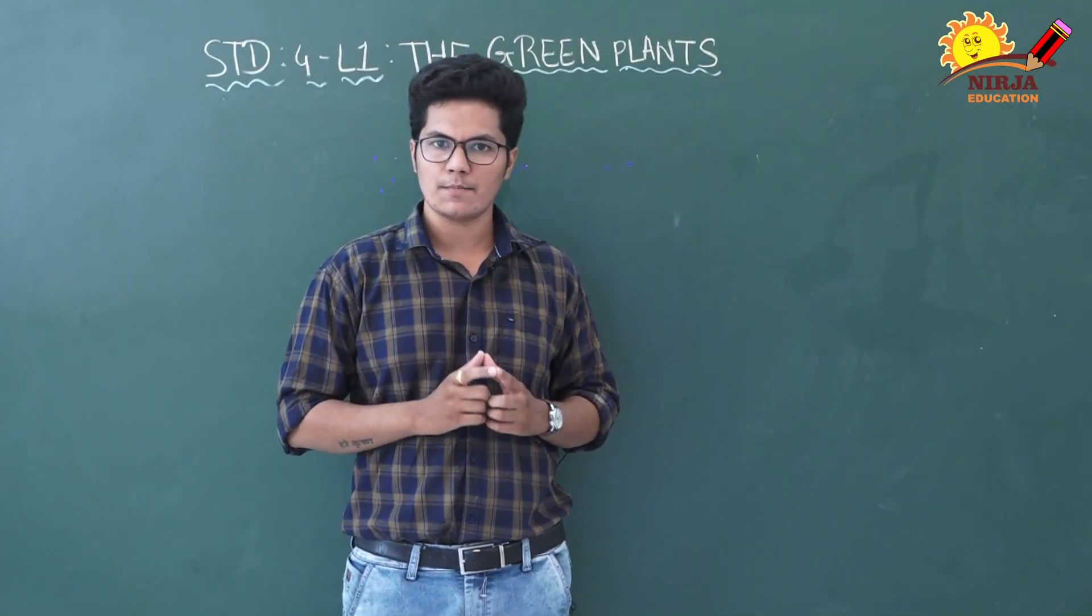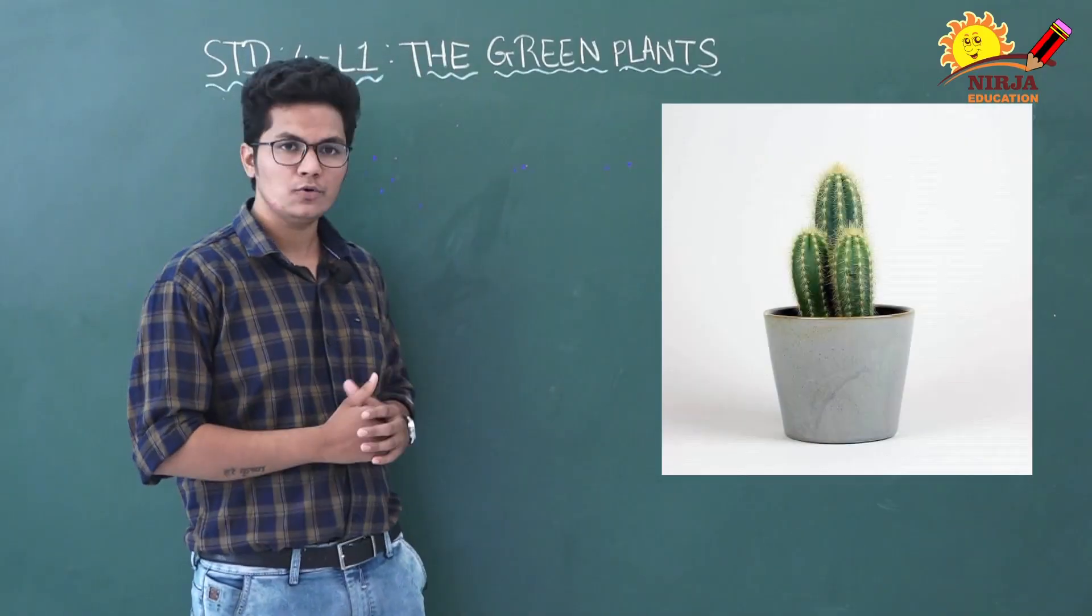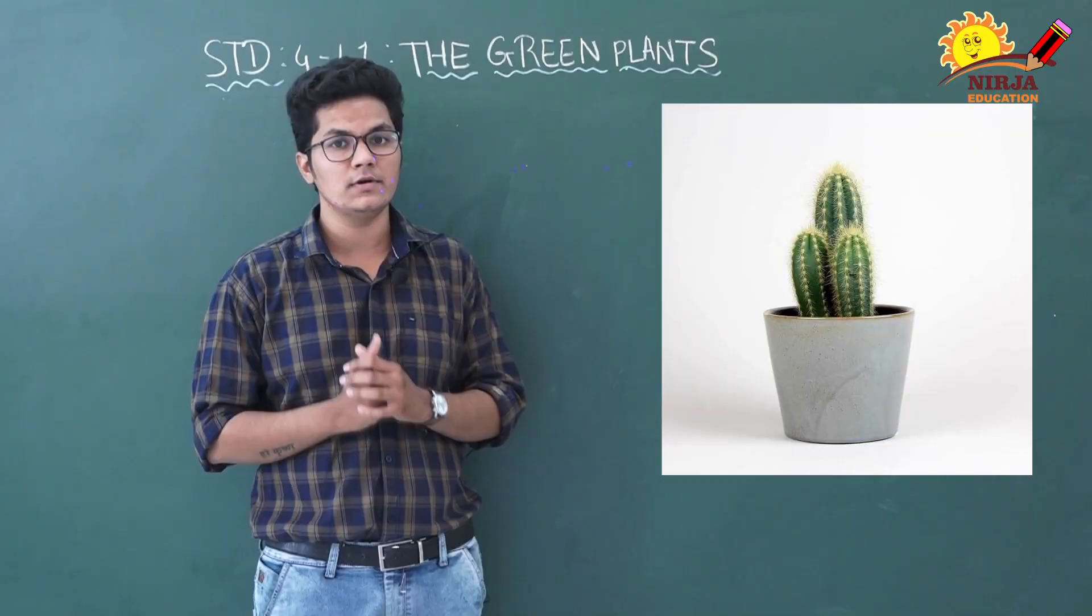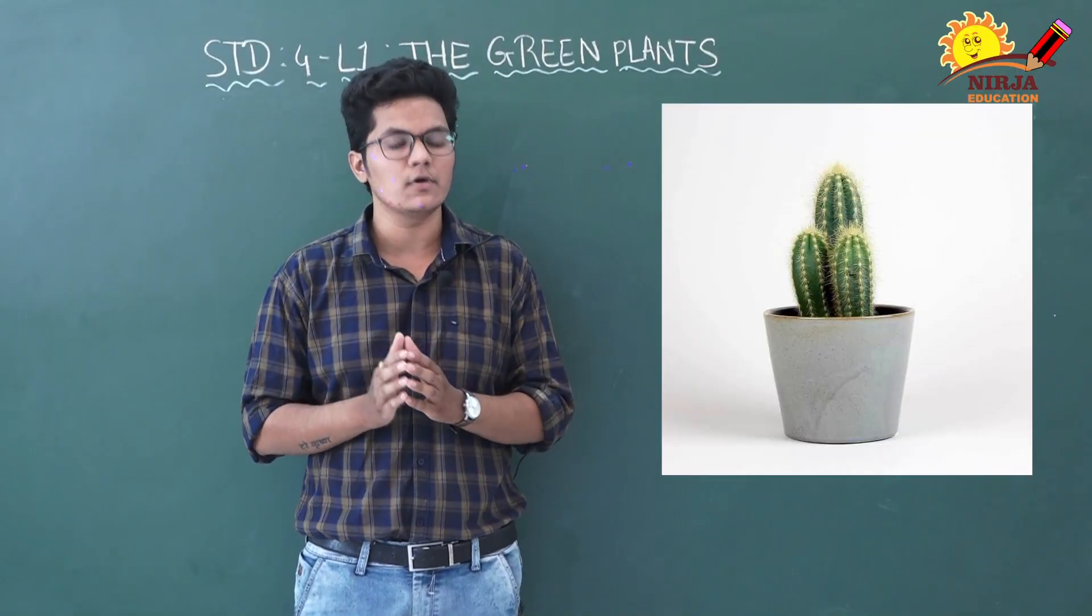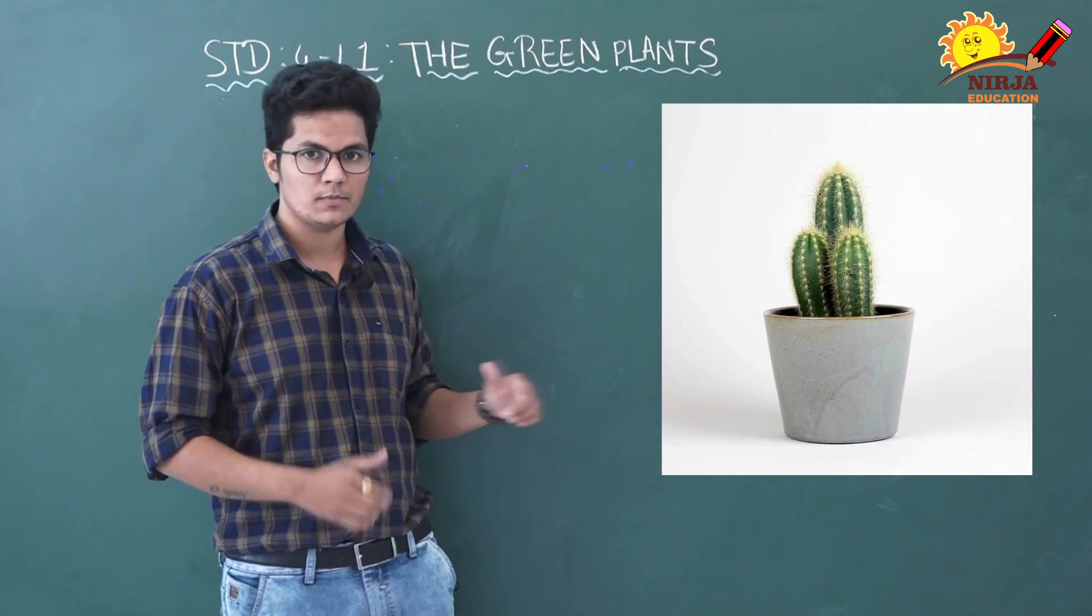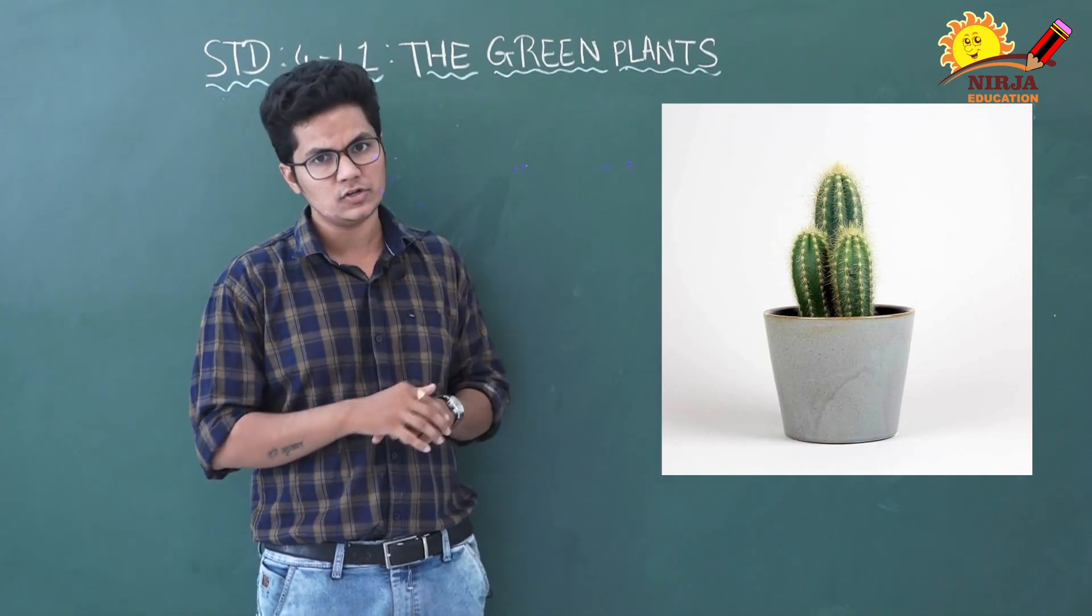Now let's talk about some unusual plants. Some plants like cactus do not have leaves. You can see in the picture cactus do not have leaves. So how do they make their food? Photosynthesis takes place in their green fleshy stem.